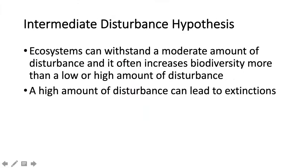Pertaining to succession and disturbances, you should know that habitats can withstand a moderate amount of disturbance. Too little or too much disturbance doesn't help increase biodiversity, but research shows that a moderate level of disturbance can actually increase the number of species in an area. For example, a moderate forest fire — not a huge devastating one — allows new species to move in and recolonize afterwards, potentially increasing biodiversity. High amounts of disturbance, however, can eventually lead to extinction and are generally not good for the habitat.